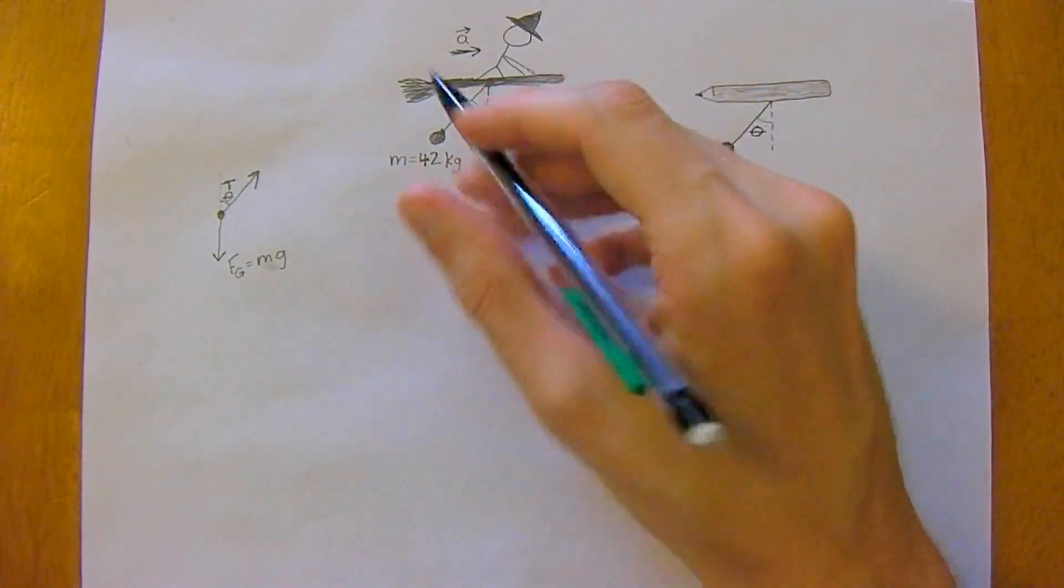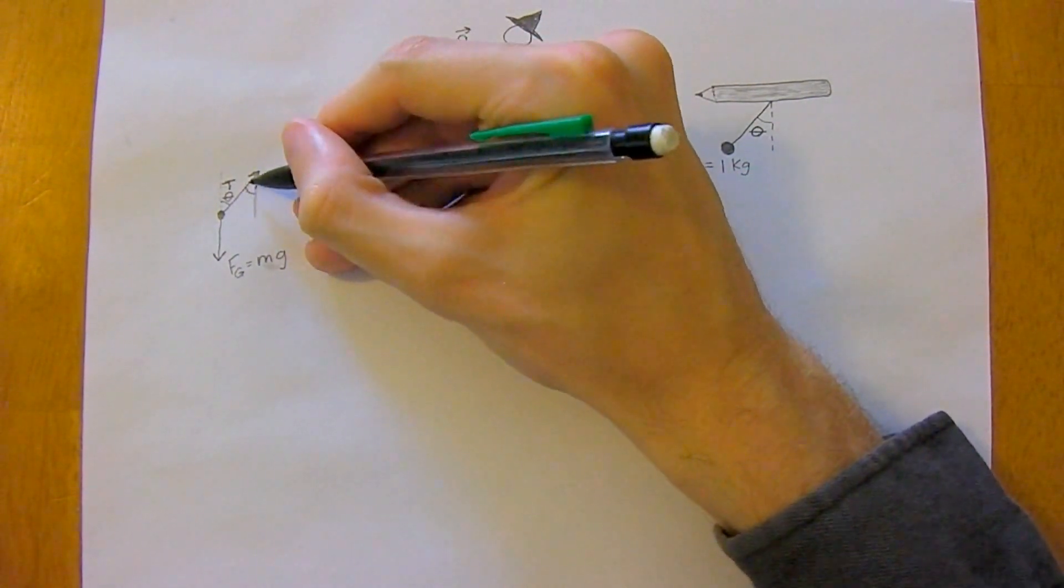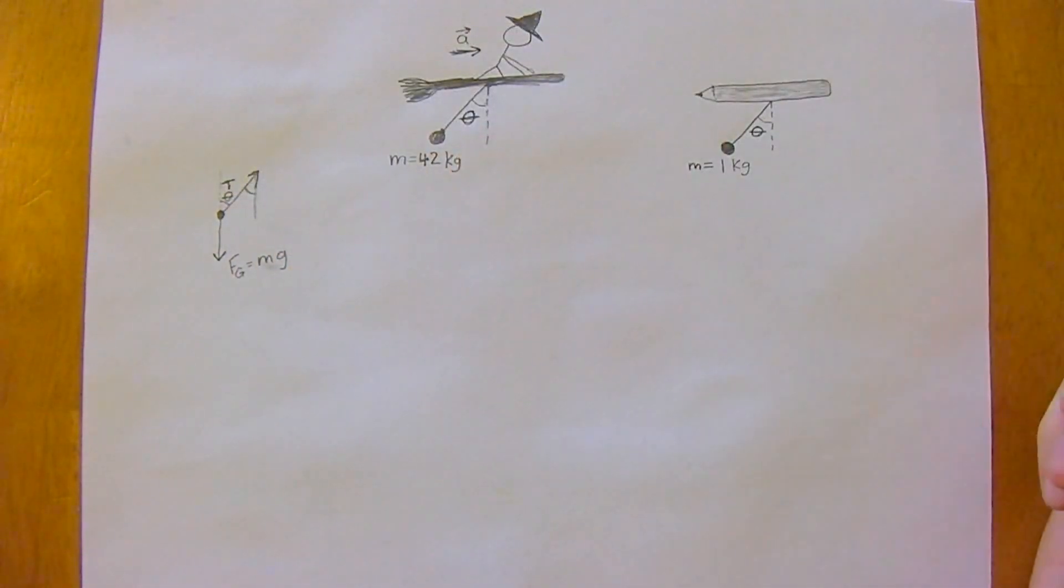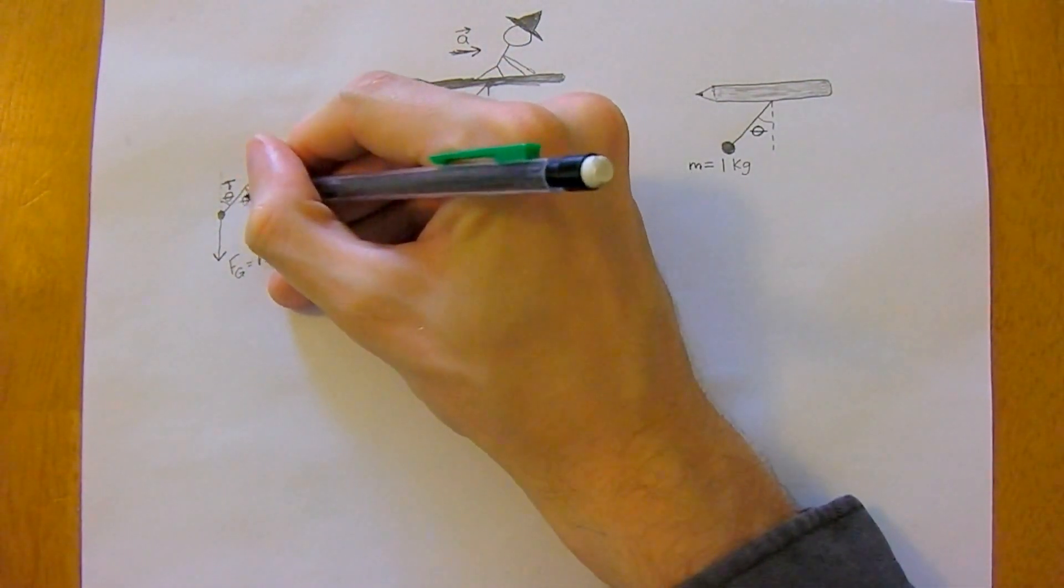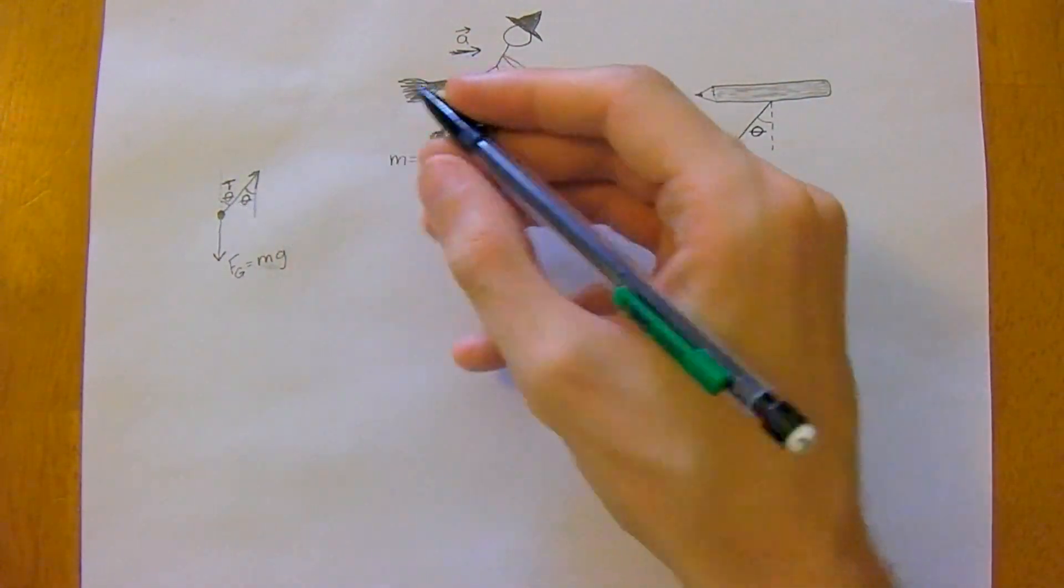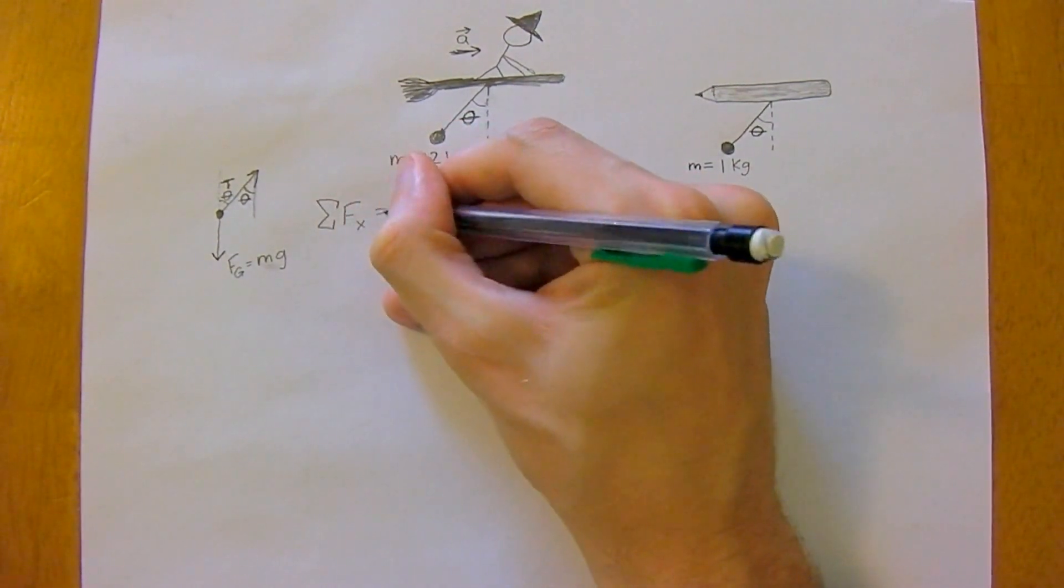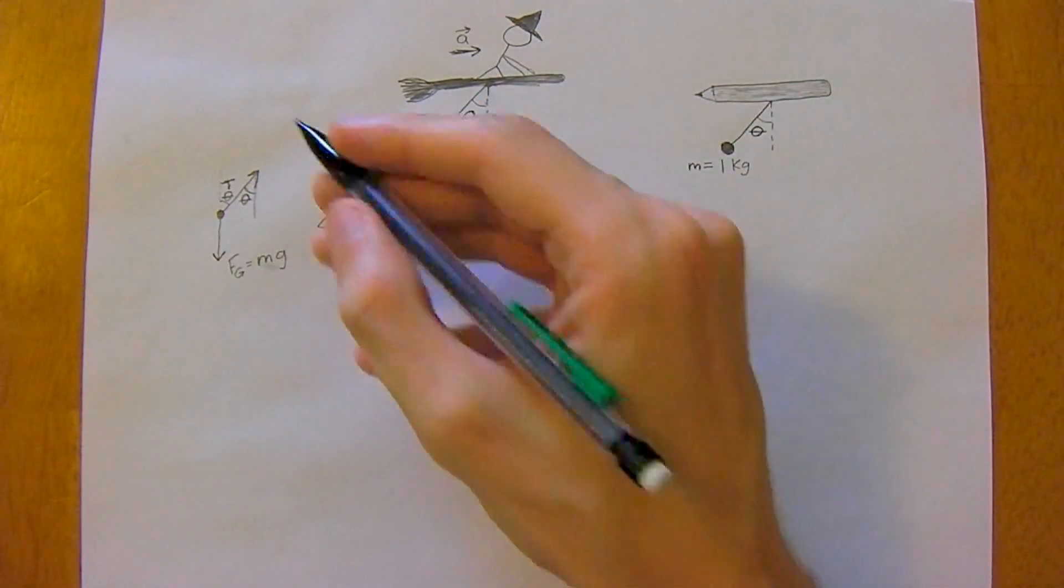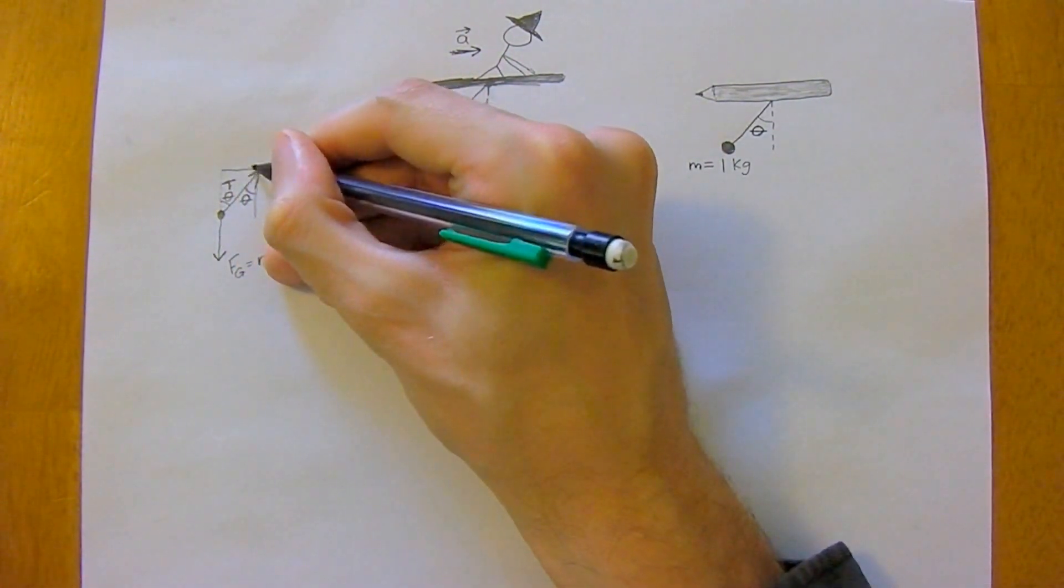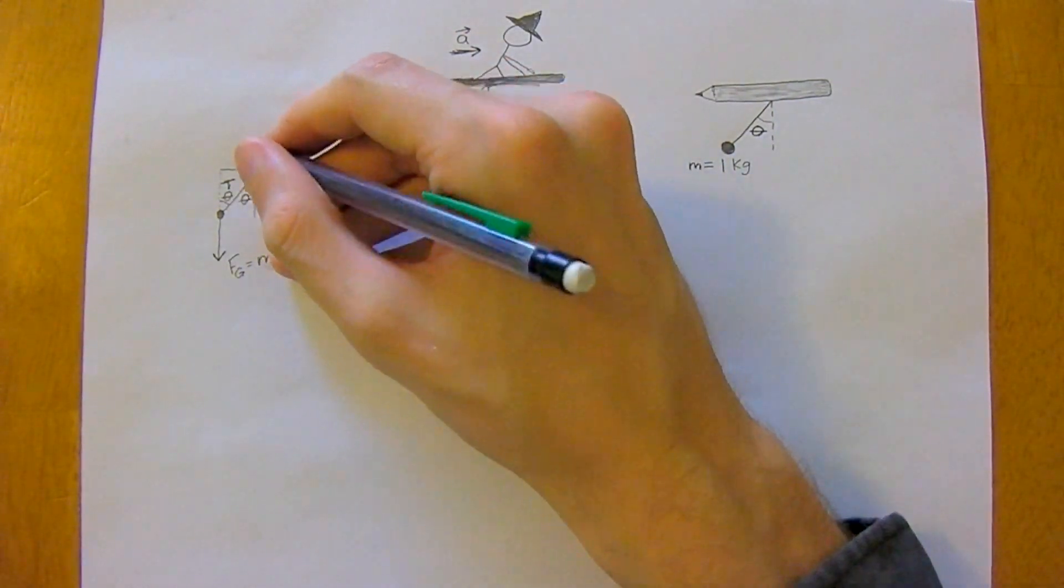This angle will be equal to this angle here, so this angle is always equal to that angle as long as these two lines are perpendicular. Now we're going to look at just the forces in the x-direction. The sum of the force in the x-direction is equal to the component of the tension going this way, so opposite—SOHCAHTOA—so it's going to be T sine theta.